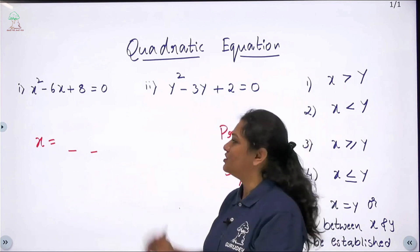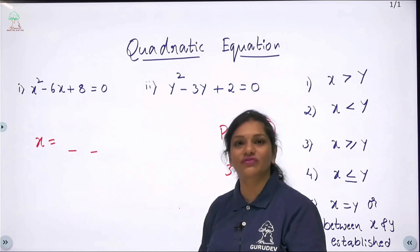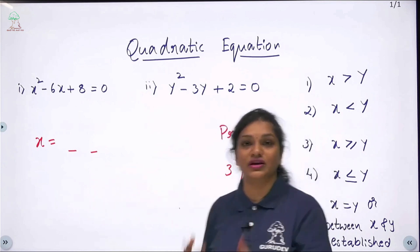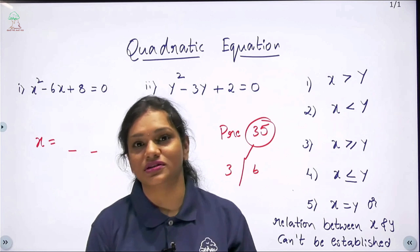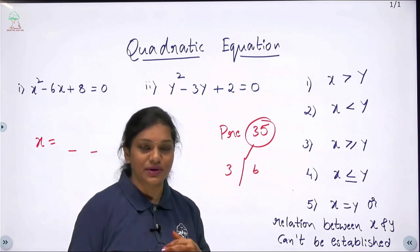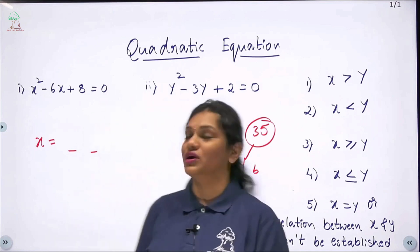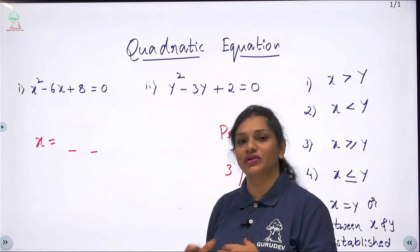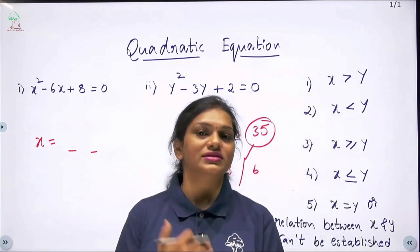If you use the basic factorization or formula method, it is very lengthy — you have to find the roots and then compare them. In prelims, quantitative aptitude is only about 20 minutes, so within a minute we have to solve each question. If you use the traditional method it takes more than a minute, so we will apply a short method instead.